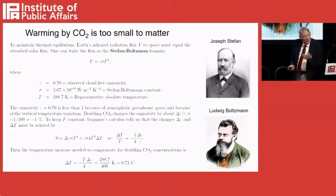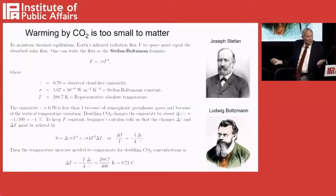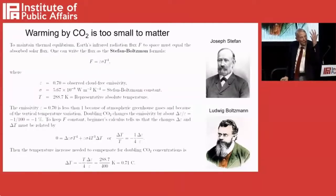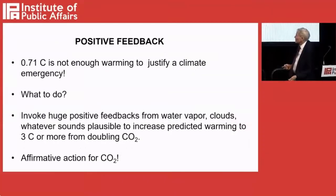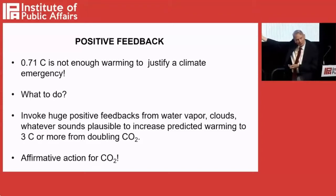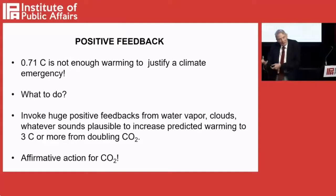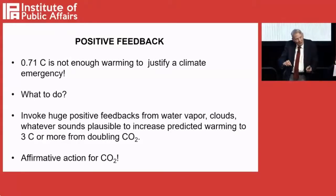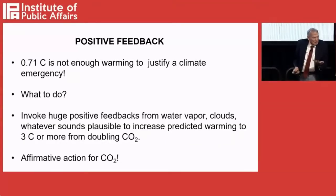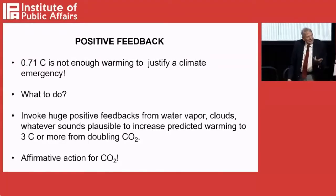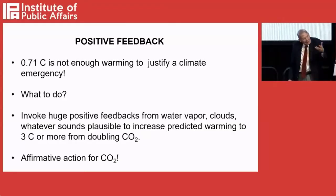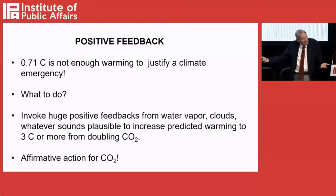So the direct warming from CO2 is less than 1 degree — 0.7 degrees. Very small. This is a problem if you're a climate scientist, because nobody cares about 0.7 degrees. You can't feel it. So what to do? You invoke huge positive feedbacks in all of these UN climate models. Instead of acting like a normal system, somehow the 0.7 degrees gets multiplied by factors of 3, 4, 5, even 10 in some cases — and it's almost impossible to justify this idea of a positive feedback. But you need it; otherwise CO2 is too wimpy to be worried about.